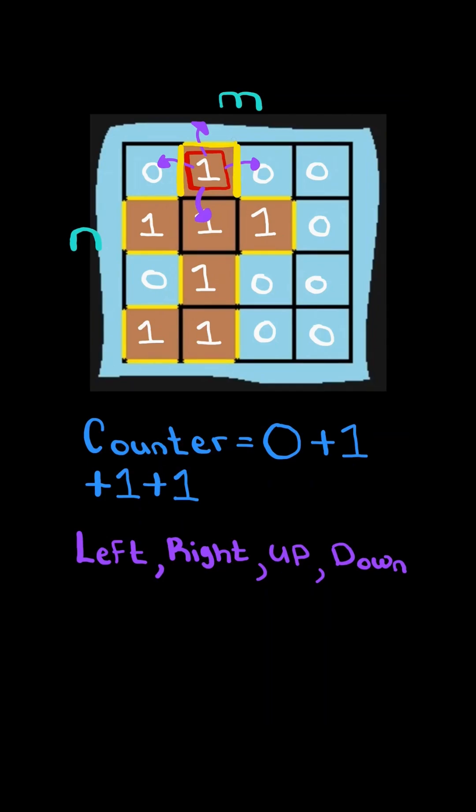Once we're done checking all the directions, we move to the next square. Notice the next couple of squares are zero, so we skip them.